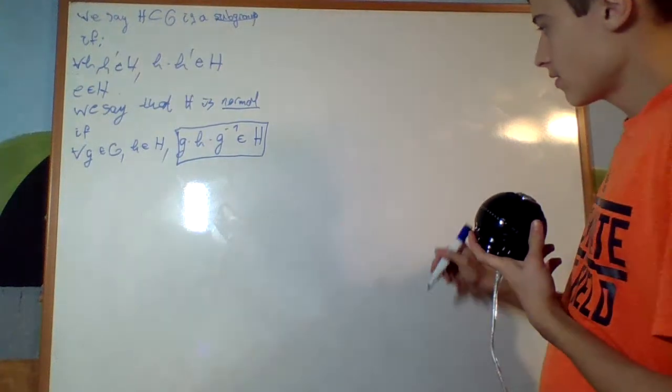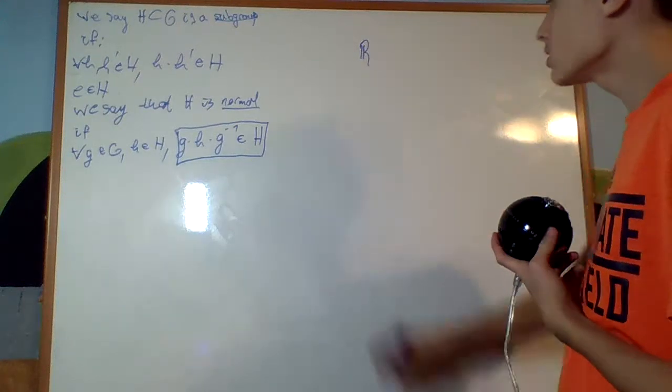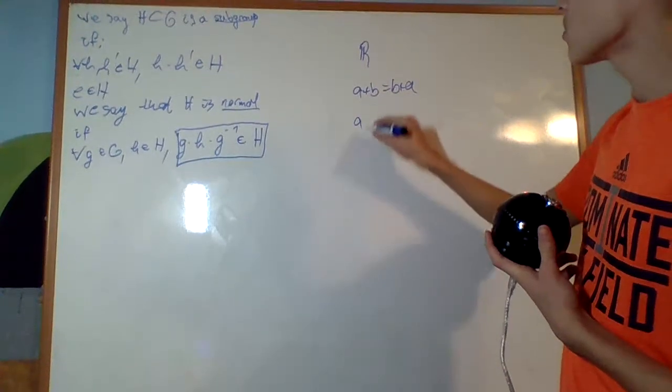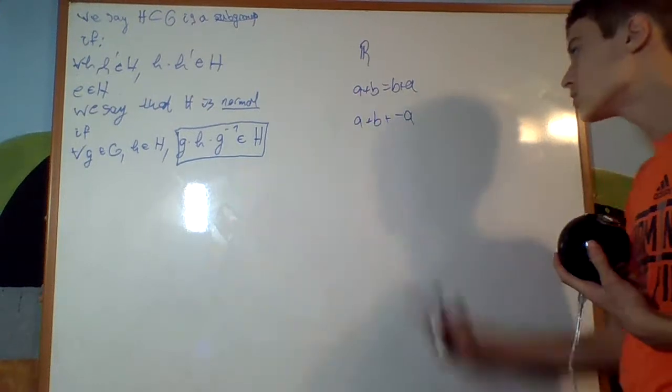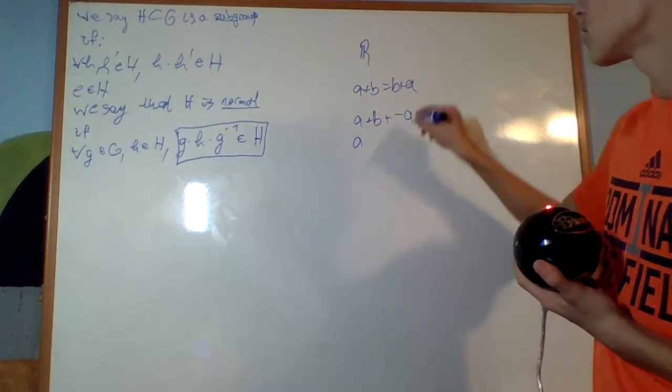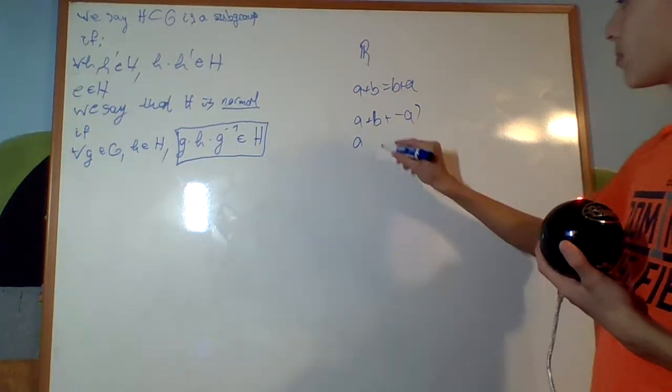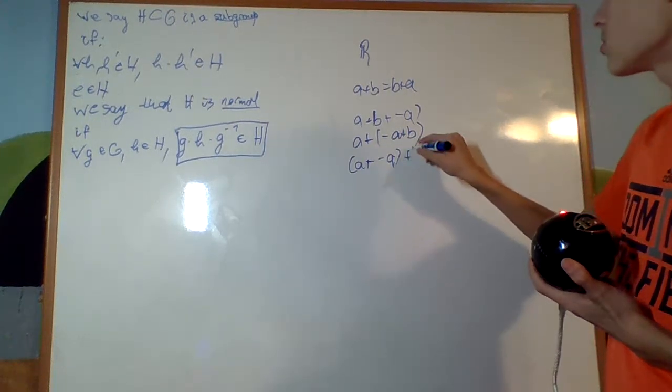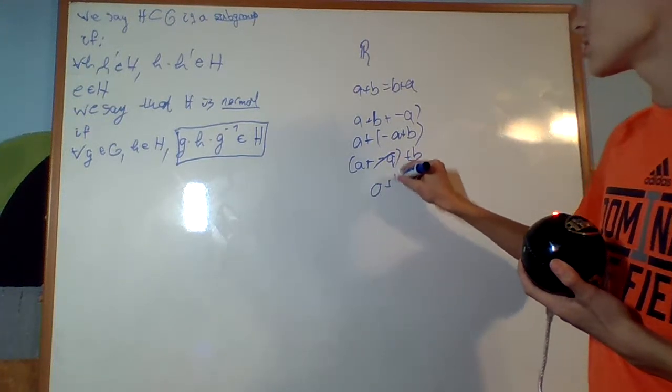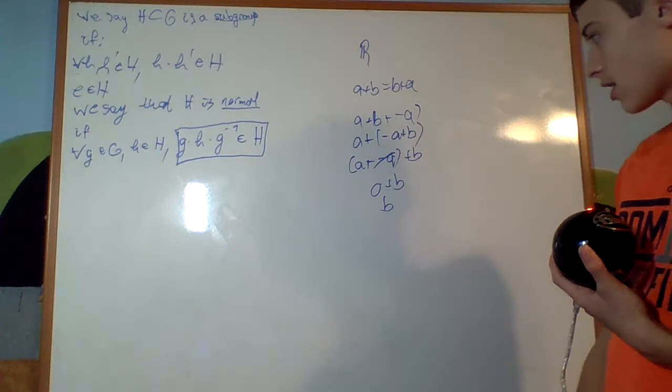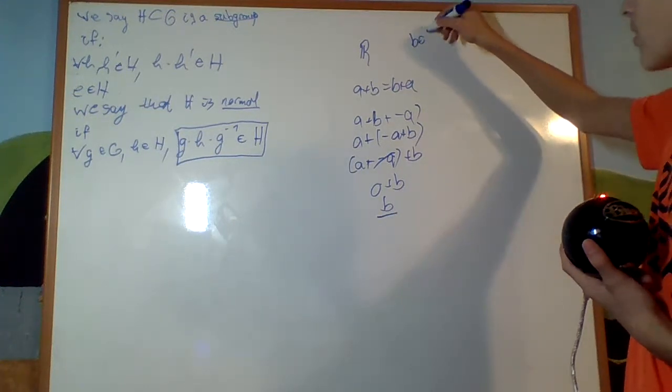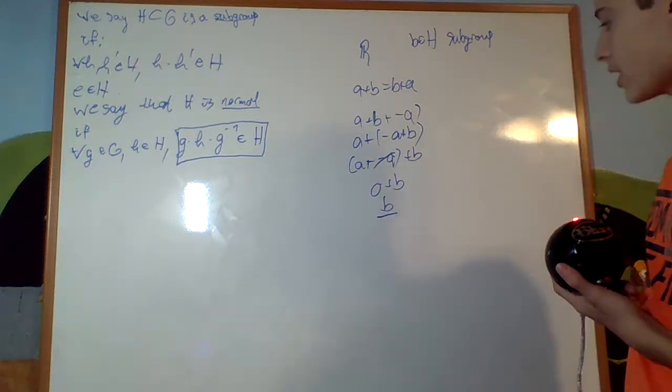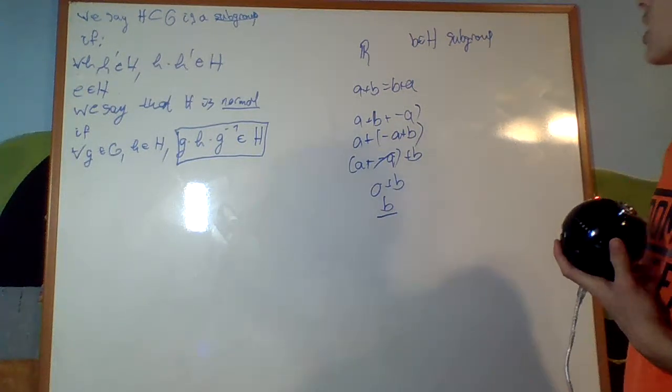Now, what does this mean, for example, in the real numbers? Well, the real numbers, if you don't know, is commutative. So, A plus B is B plus A. So if I'm doing A plus B plus A inverse, which is usually denoted minus A, I can just flip it around. A plus minus A plus B. Then I can, by associativity, flip those parentheses. That cancels out to be 0, 0 plus B, but that's just B. So, if B is an element of H, a subgroup, then conjugation just yields itself, and thus H is normal. Any subgroup of the real numbers is normal, and this is true for any abelian group.